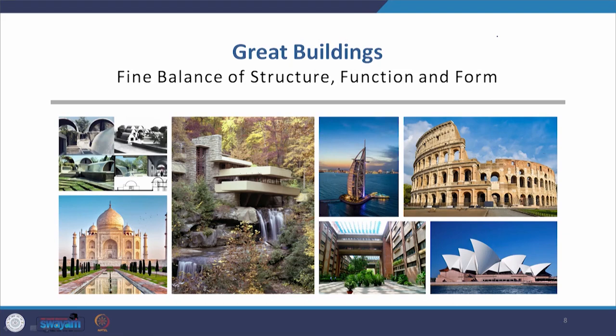You can take any building across the world from ancient times and you will find a fine balance of structure, function, and form — whether it is the Colosseum in Roman times, the Taj Mahal in the Mughal era, the Fallingwater as probably the greatest house of the 20th century, the Sangath by B.V. Doshi in Ahmedabad, the Sydney Opera House, the Burj Al Arab in Dubai, or the India Habitat Centre by Stein in Delhi.